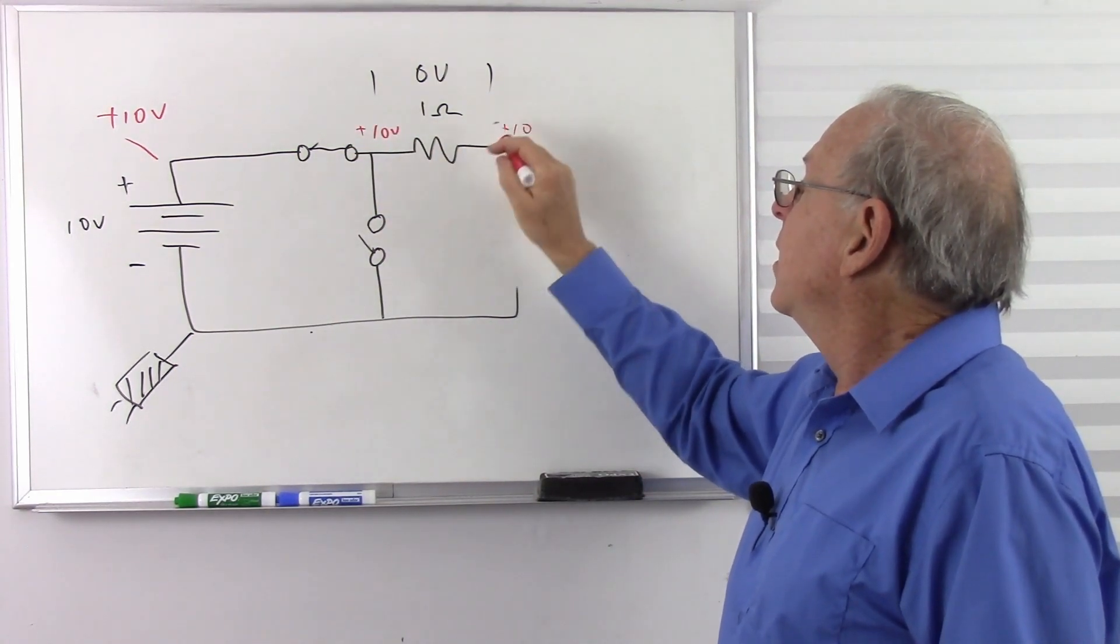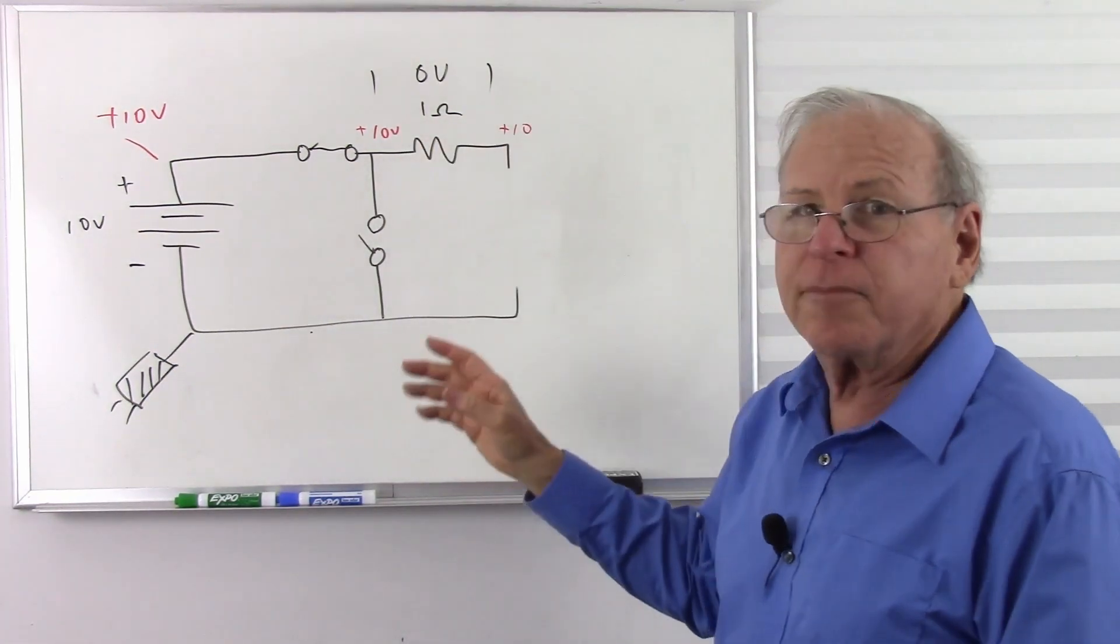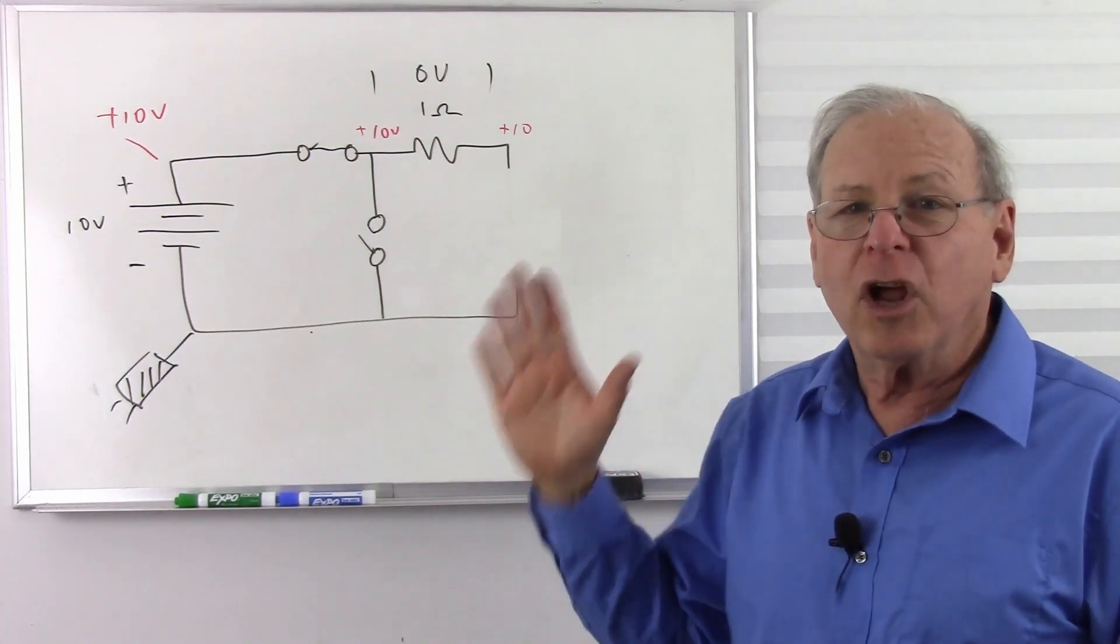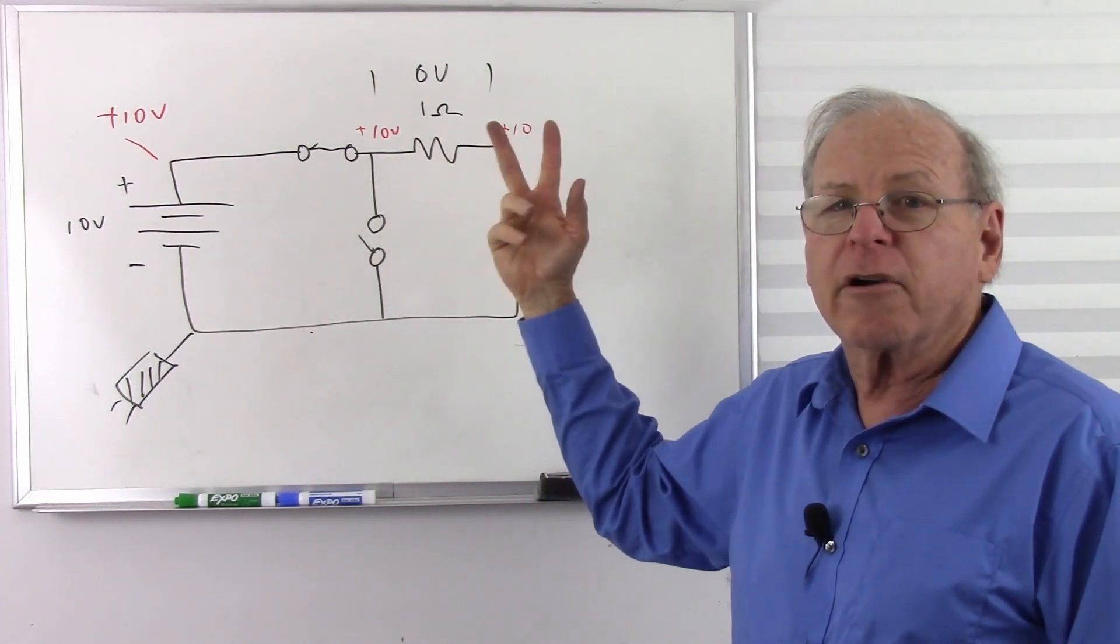So we have plus 10 there. We have plus 10 there. So in this circumstance, we do not have any voltage drop. So the answer in this case is no. There is no voltage across this resistor because we no longer have any current flowing.